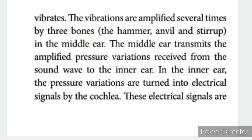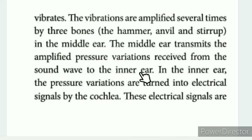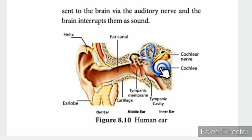The ear drum vibrates and the vibrations are amplified. The hammer stirs up and the middle ear transmits the amplified pressure variations received from the sound wave to the inner ear. In the middle ear, the pressure variations are turned into electrical signals by the cochlea. These electrical signals travel via the auditory nerve to the brain, where they are perceived as sound.